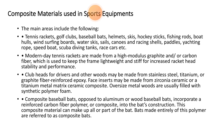The club heads for drivers and other woods may be made from stainless steel, titanium, or graphite fibre in epoxy resin. Face inserts may be made from zirconia ceramics or titanium metal matrix ceramic composites. The hollow metal wood is usually filled with synthetic polymer foam. Composite baseball bats, unlike aluminum or wood bats, incorporate reinforced carbon fibre polymers into the bat's construction, and bats made entirely of these polymers are referred to as composite bats.